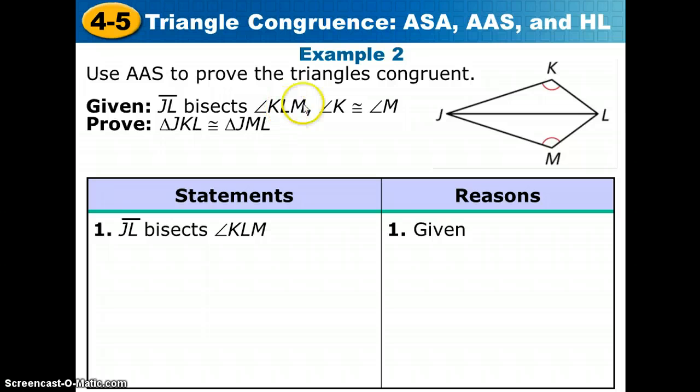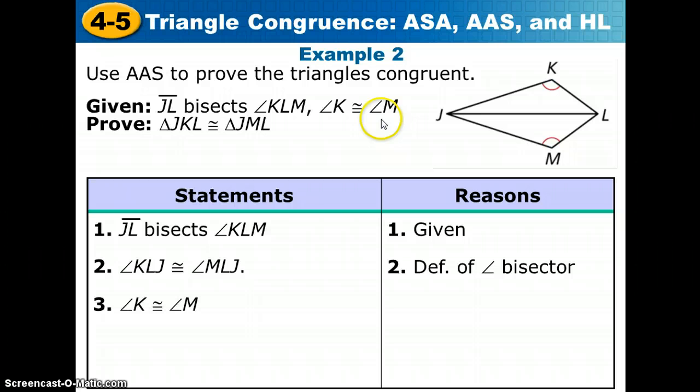Now, before we restate the other given statement, this statement tells me something that I need to conclude before I can state angle K and angle M are congruent. I need to still say angle KLJ, the top angle of these two on the right, is congruent to angle MLJ, the one on the bottom of these two, by the definition of angle bisector. Now we can go back and say the other given. Angle K is congruent to angle M.